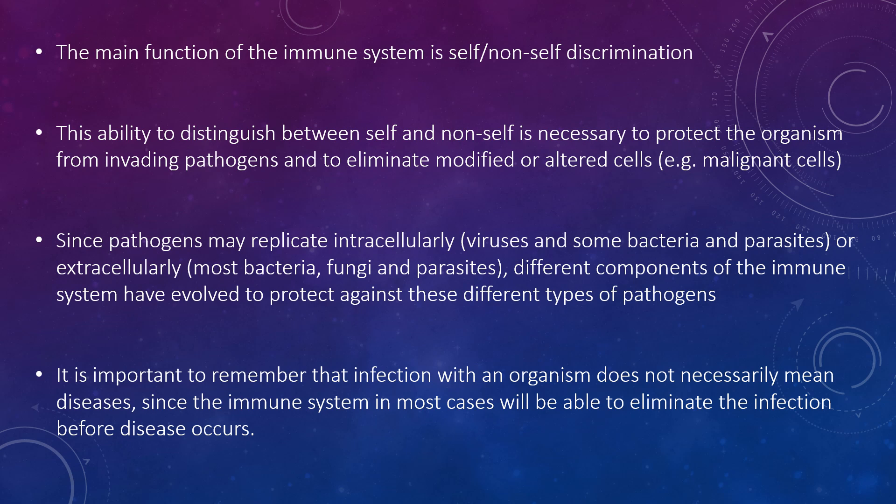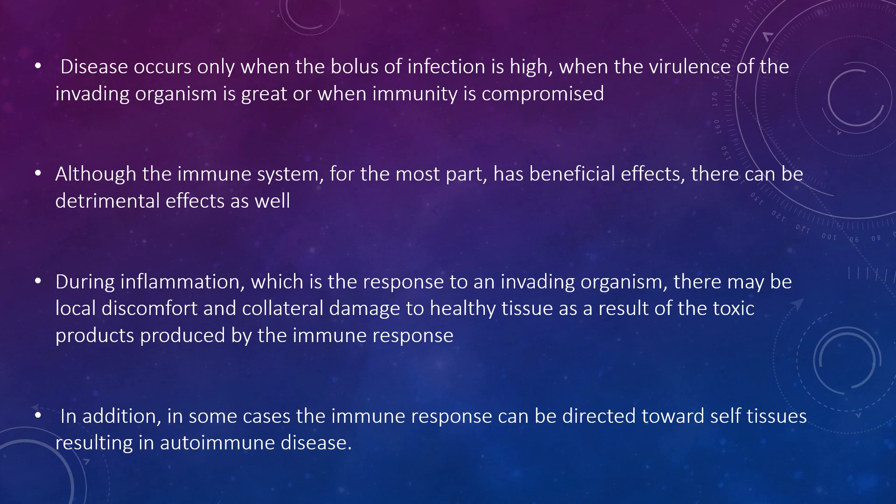Since pathogens may replicate intracellularly — such as viruses and some bacteria and parasites — or extracellularly — such as most bacteria, fungi, and parasites — different components of the immune system have evolved to protect against each type. It is important to remember that infection does not necessarily mean disease, since the immune system will in most cases eliminate the infection before disease occurs. Disease only occurs when the infection load is high, when the virulence of the invading organism is great, or when immunity is compromised.